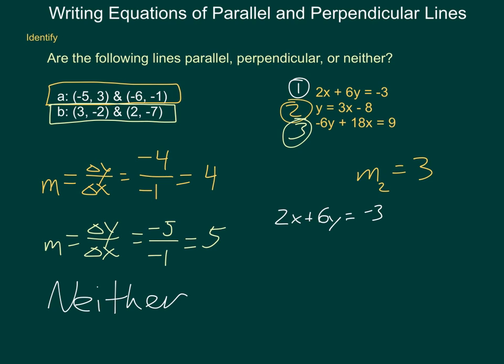If I solve this for Y, I subtract 2X, so 6Y equals a negative 2X minus 3. Divide everything by 6, Y would equal a negative 1/3 X minus 1/2. So my slope 1 is a negative 1/3.